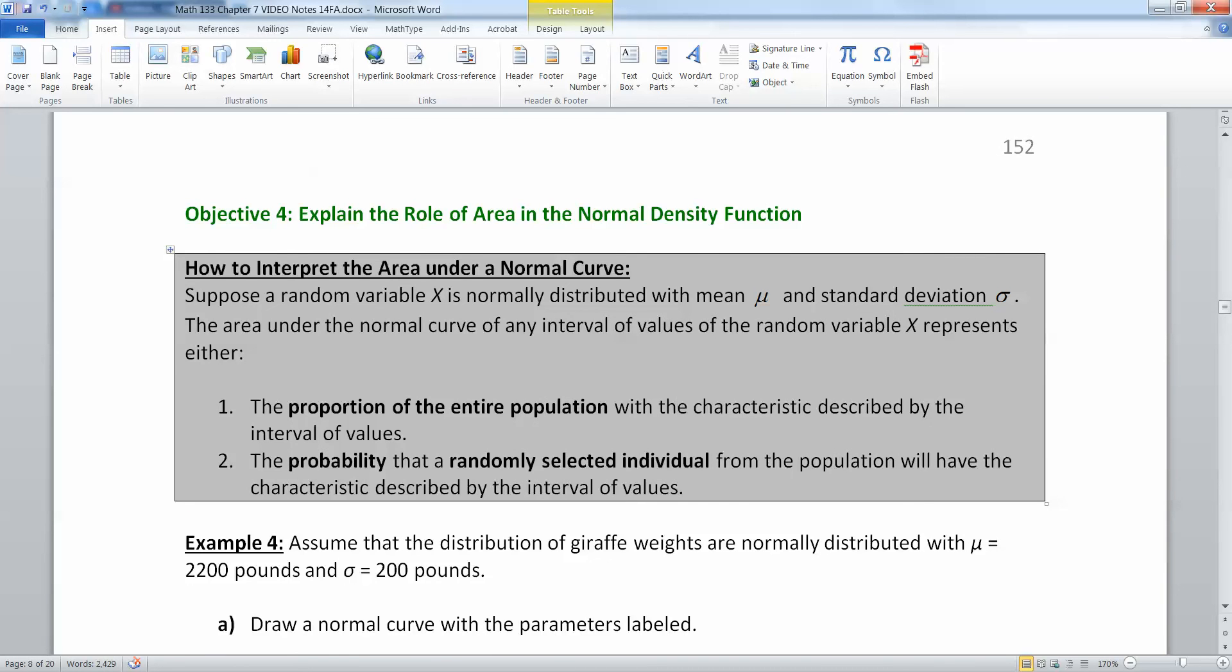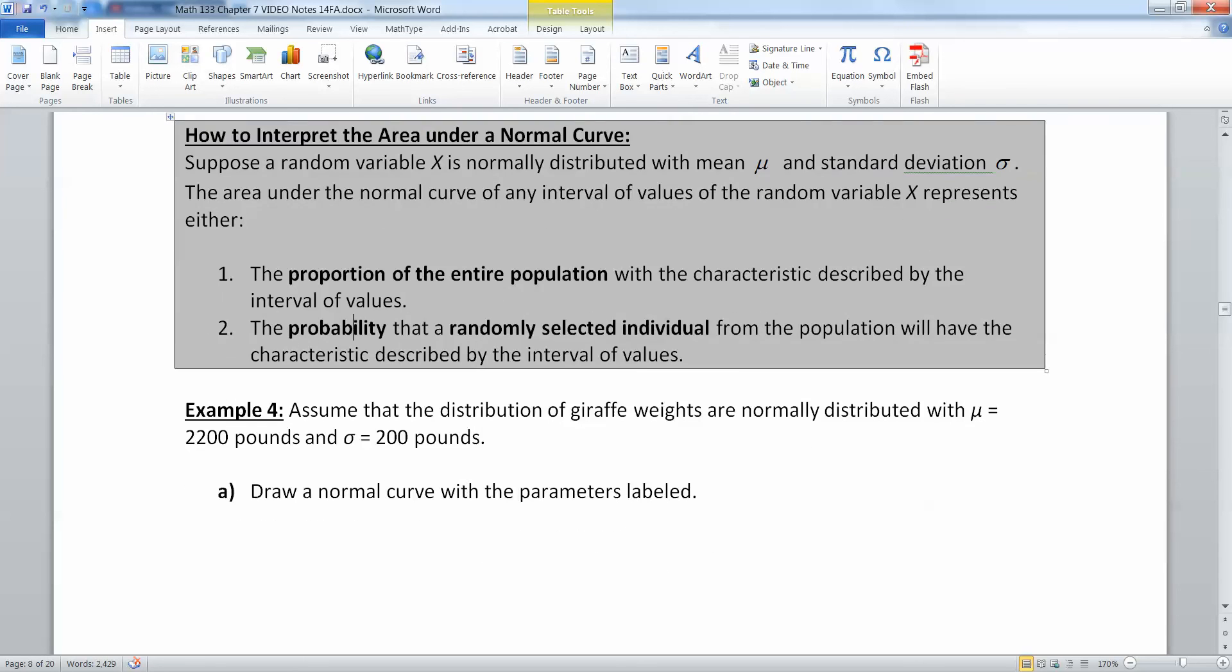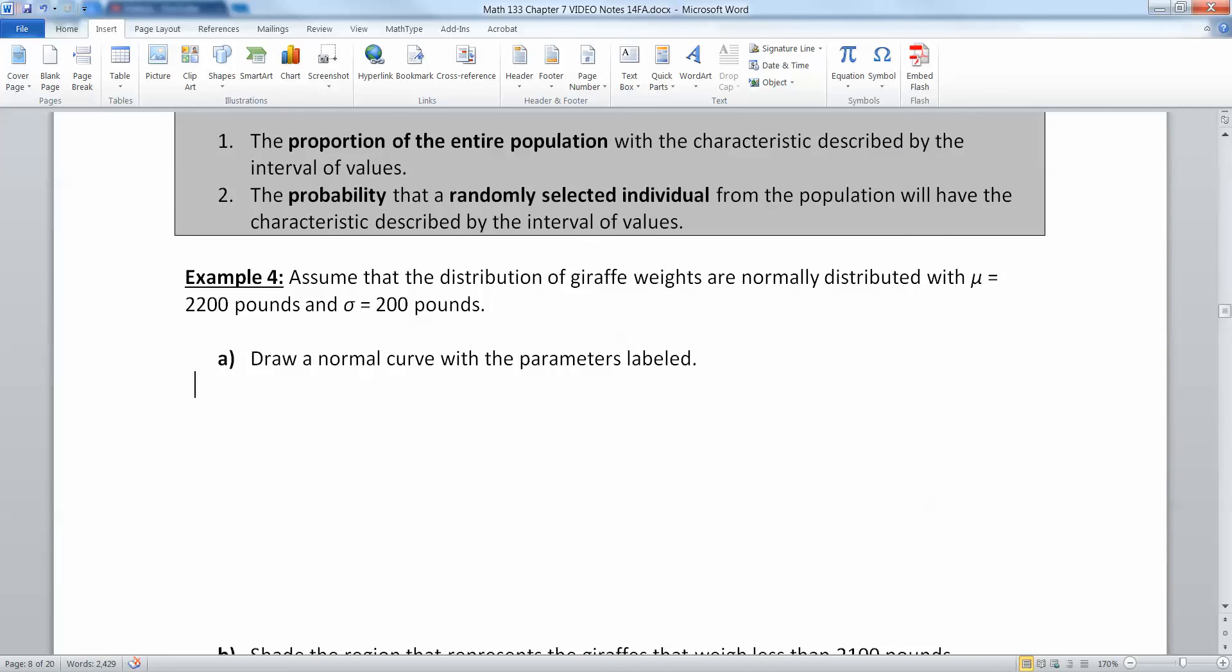Before we get into that, let's explain what we're seeing when we look at a normal curve just a little bit more. When we interpret the area under a normal curve, you can think of it a couple ways. You can think of it as the proportion of the entire population that has that characteristic, or you can think of it as the probability that a single randomly selected individual from the population will have that characteristic.